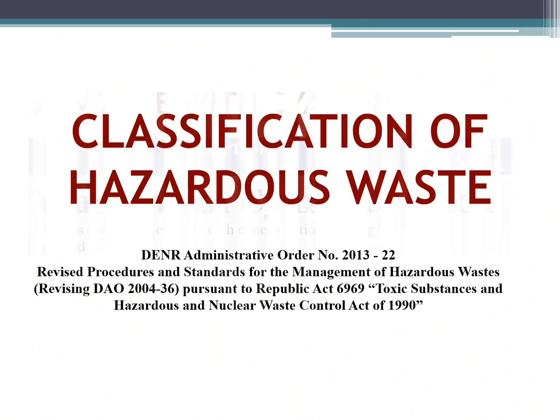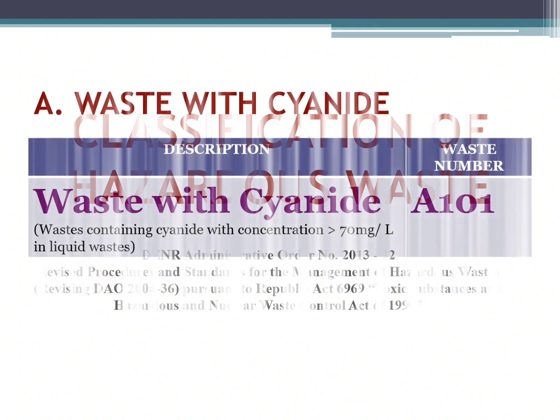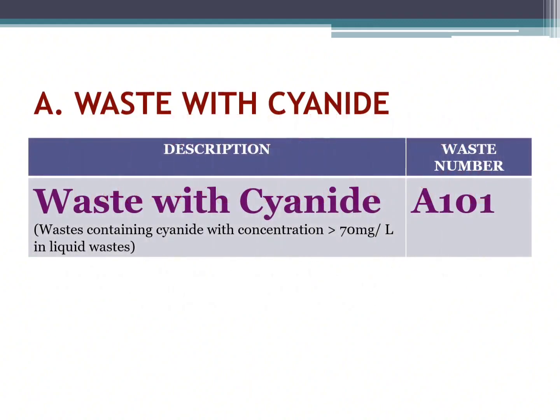First is waste with cyanide. Waste containing cyanide with a concentration of 70 mg per liter in liquid waste. Its waste number is A101.